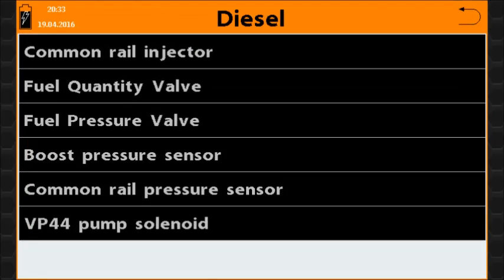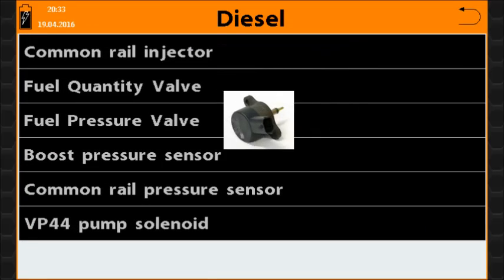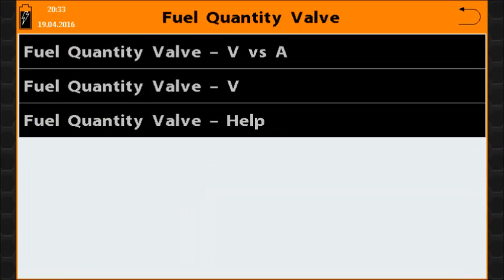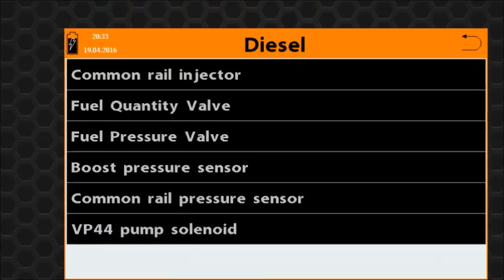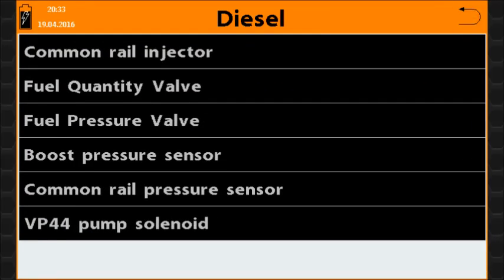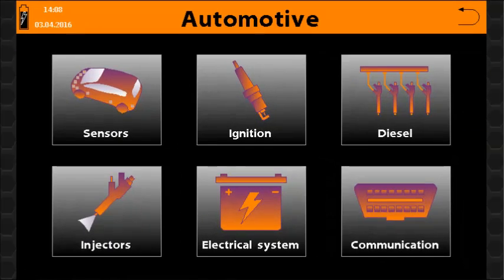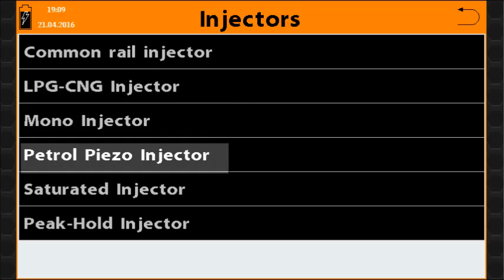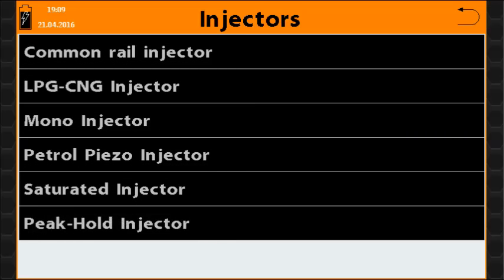The Diesel function icon opens a menu that contains a list of diesel system specific components. After you select the desired component, a submenu allows you to select specific tests or general help about the component selected. The Injectors icon is a shortcut to the list of injector systems, and these specific tests allow you to quickly and easily check the correct operation of the injector system.